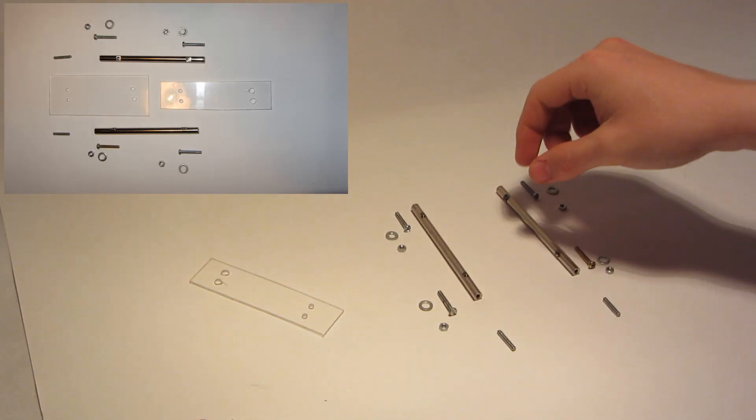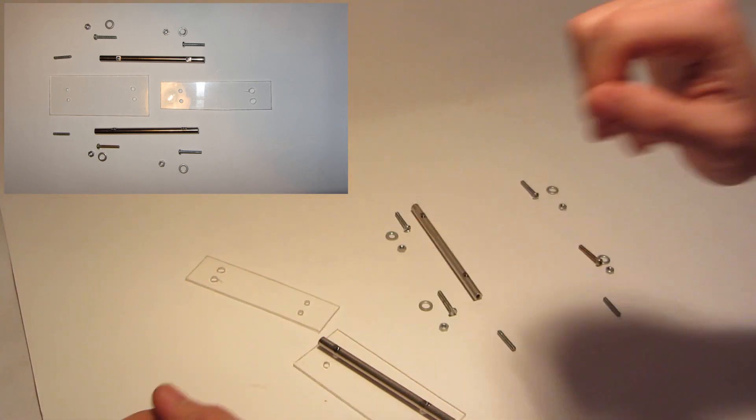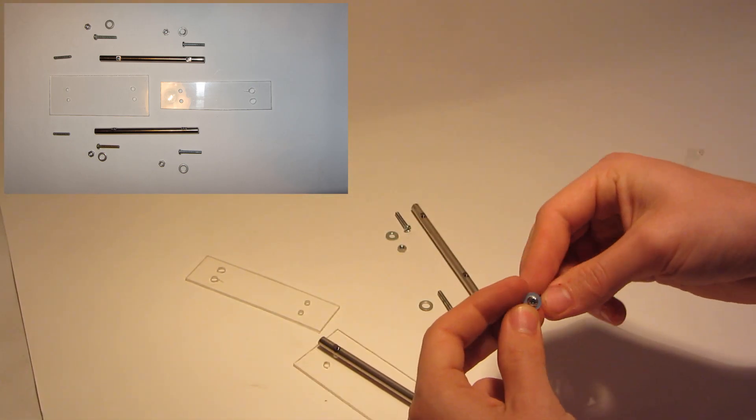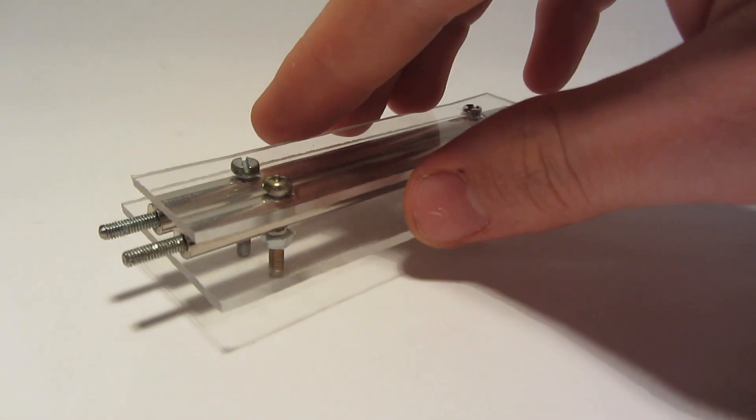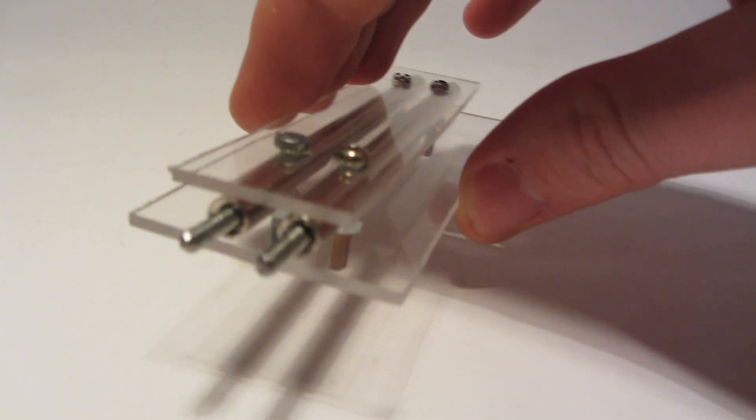Here I am screwing together my rail setup consisting of two metal rails and a top and bottom acrylic piece. These are the finished rails. You can find more detailed pictures on my website.